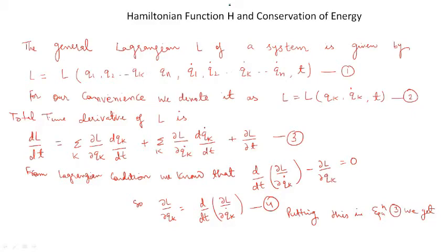Hello everyone. Today we will discuss the Hamiltonian function (capital H) and conservation of energy. The general Lagrangian L of a dynamical system is given by L = L(Q1, Q2, ... Qk, ... Qn, Q1-dot, Q2-dot, ... Qk-dot, ... Qn-dot, T) — call this equation 1. Here Q1, Q2, ... Qk are generalized coordinates; Q1-dot, Q2-dot, ... Qk-dot are generalized velocities, and T is time. In short form, the Lagrangian can be written as L = L(Qk, Qk-dot, T) — equation 2.